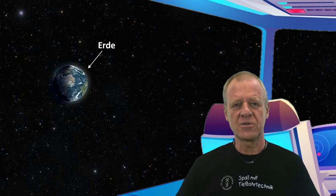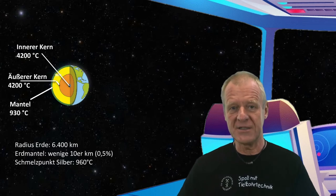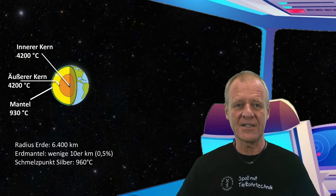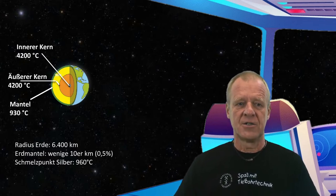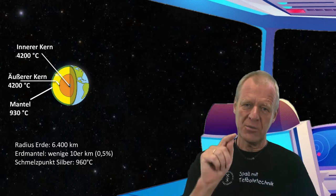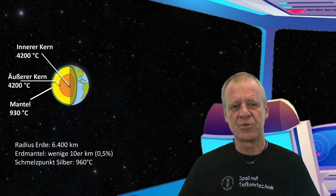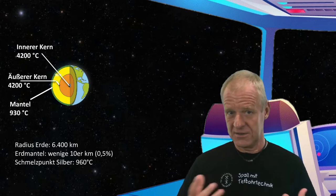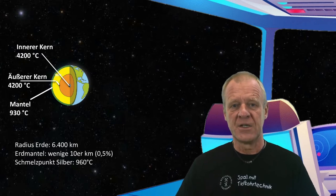The inner core consists of liquid metal at temperatures of about 4000 degrees Celsius. If we move from the surface of the Earth into the direction of its center, we only have to travel half a percent of the distance to face temperatures of about 1000 degrees centigrade — the temperature at which silver will melt. So if we are sitting on the surface of such a hot planet, should it not be possible to just drill holes in the ground and use the heat for geothermal energy?